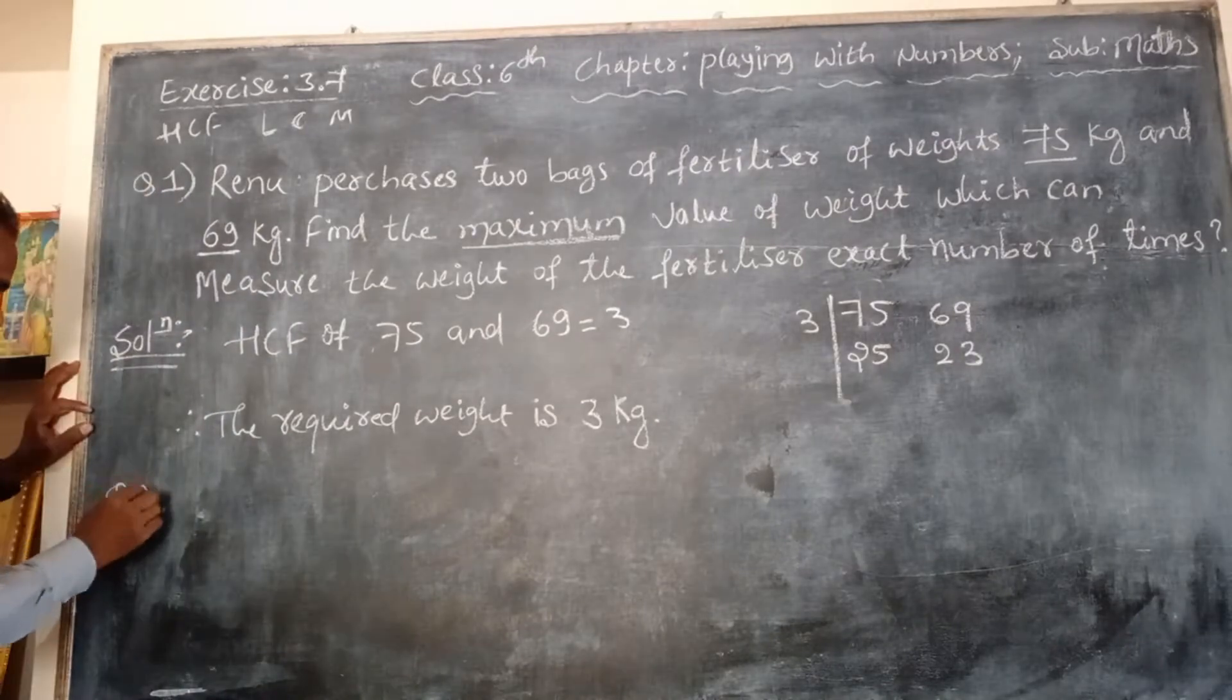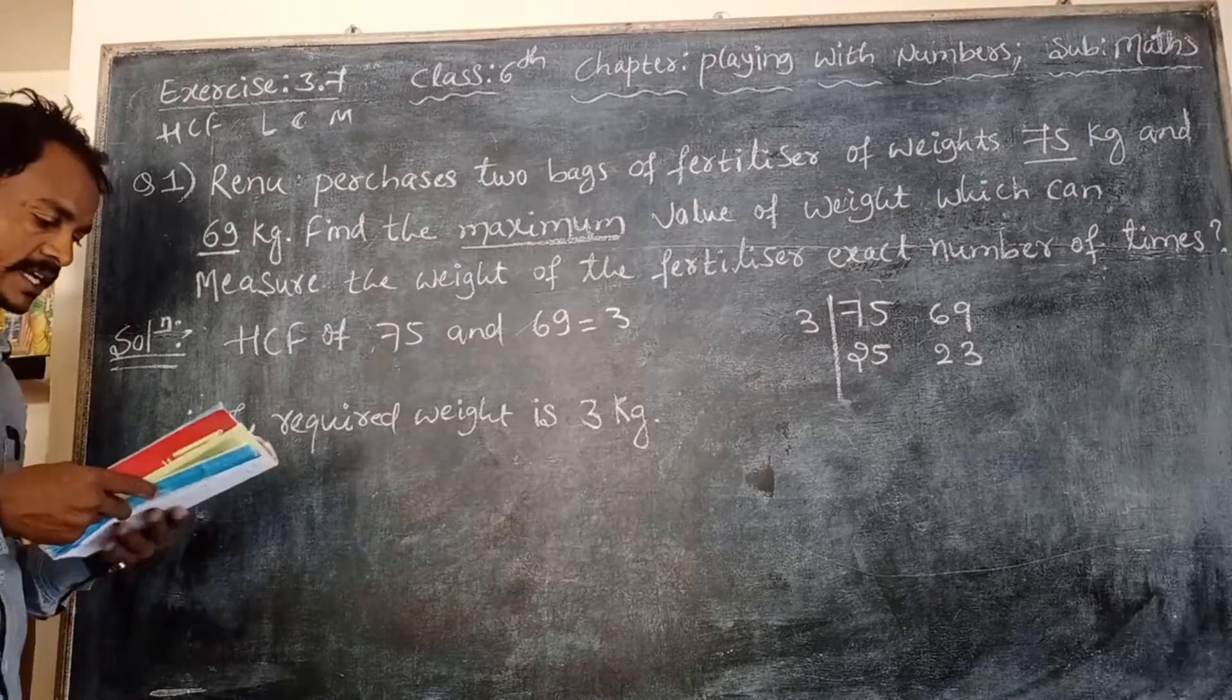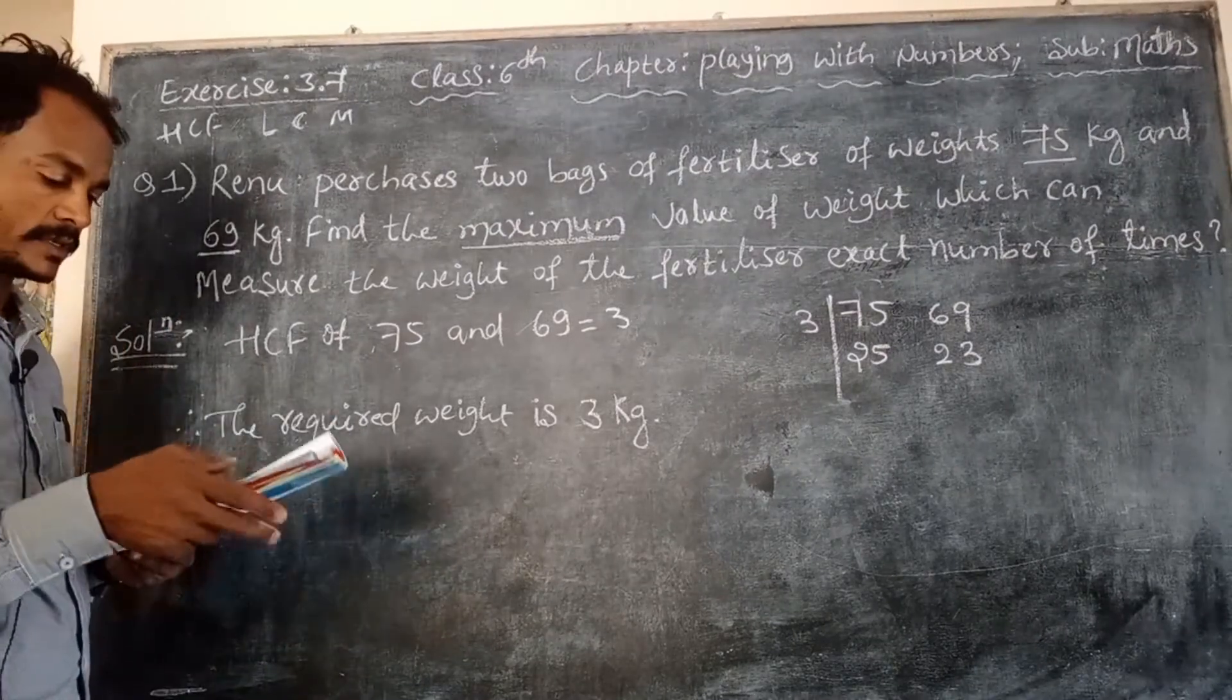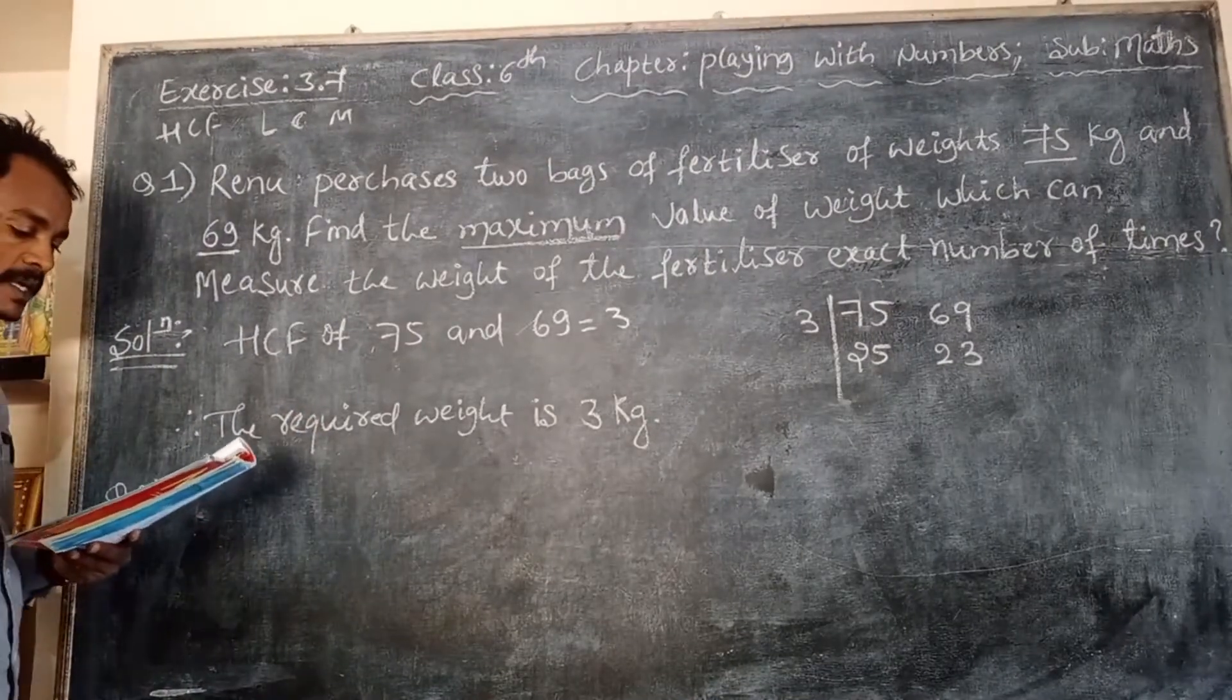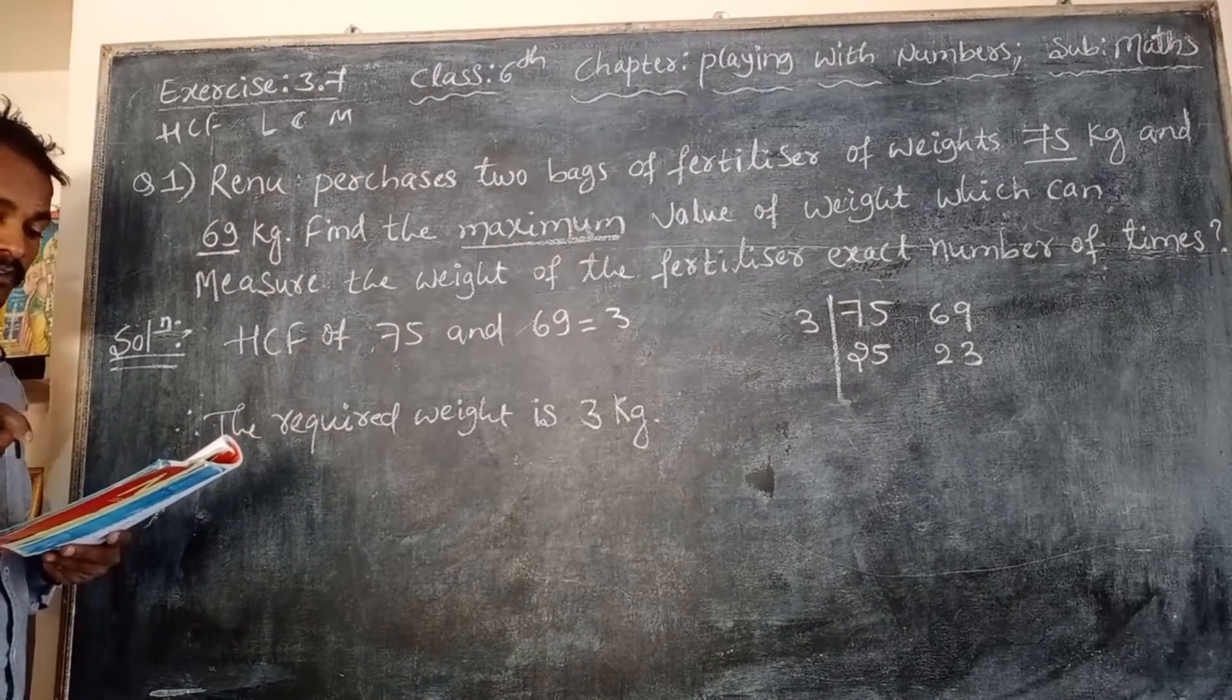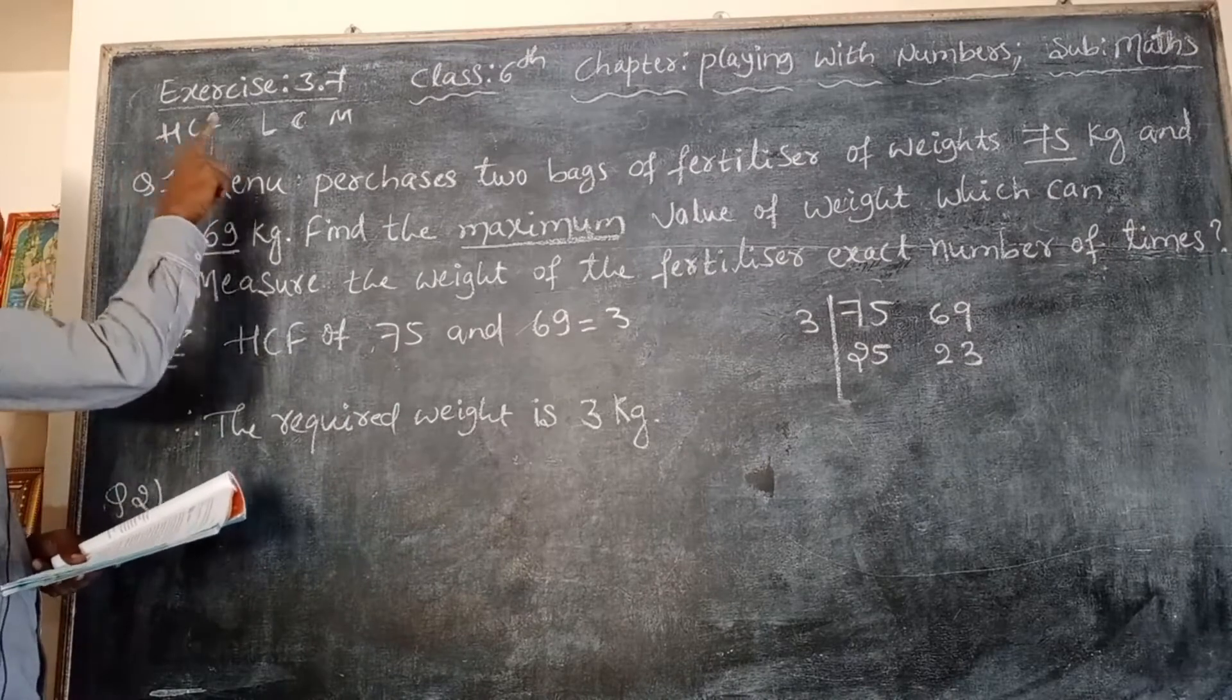Question number two says: Three boys step up together from the same spot. The steps measure 63 cm, 70 cm, and 77 cm respectively. What is the minimum? Already I told you, highest means maximum, lowest means minimum.